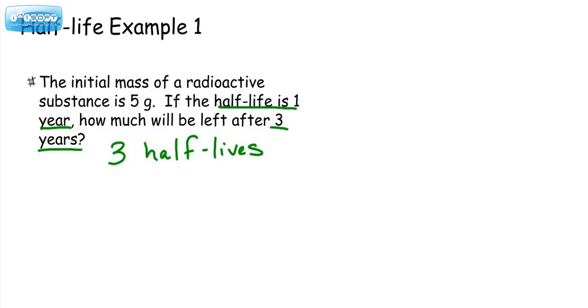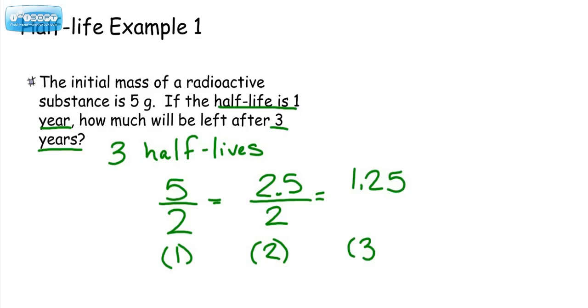If we start with 5, we're going to do 5 divided by 2. That's in our first half-life. That gives us 2.5 grams. Then, in our second half-life, we're going to again divide by 2. That gives us 1.25 grams. And in that third half-life,